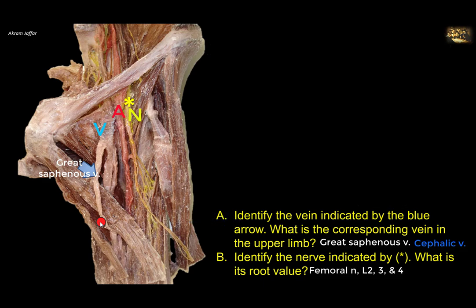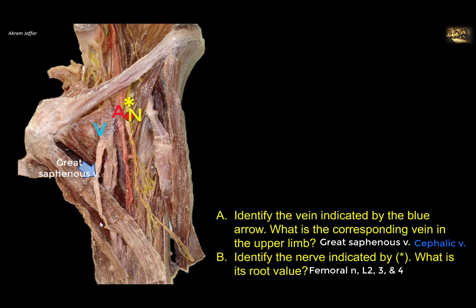Identify the nerve indicated by the asterisk and state its root value. This is the femoral nerve, a branch of the lumbar plexus, with a root value of L2, L3, and L4.